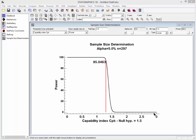It's called the power curve. It shows me the probability of rejecting the null hypothesis as a function of the true value of CPK.